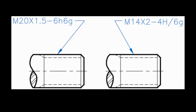Metric threads are shown on the drawing using simplified representation — you can't tell the difference just by looking at the view. But they're noted differently. First, they use M for metric, followed by the major diameter in millimeters. Then, instead of threads per inch, metric threads give the pitch. So it'll be major diameter times pitch — for example, M8×1.0, meaning 8 millimeters major diameter and each thread crest is 1 millimeter apart.